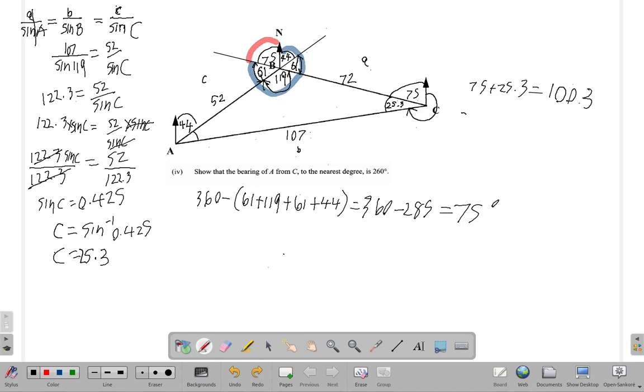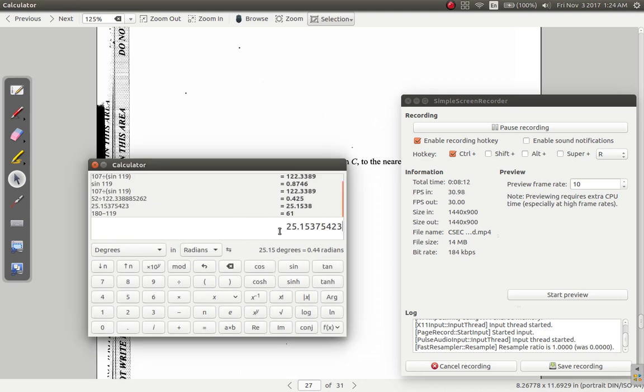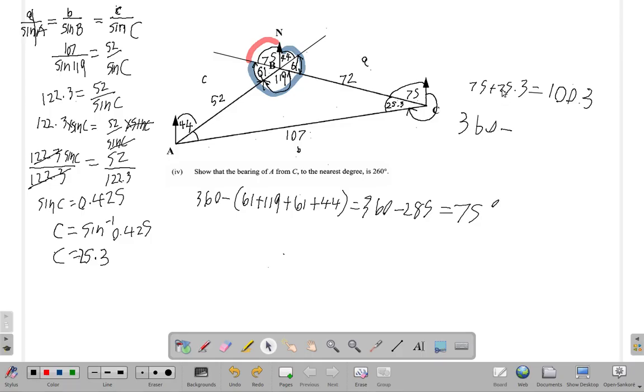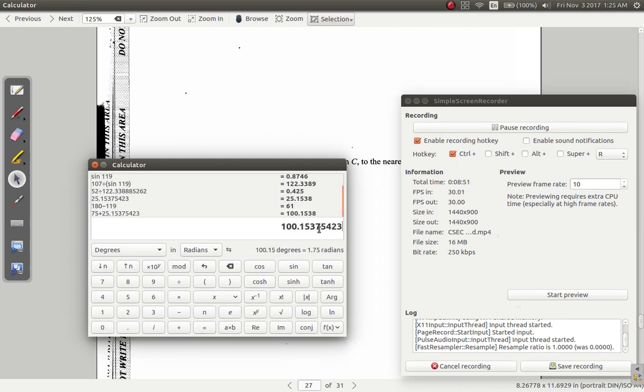Then 360 minus this 100.3. Actually, let me get back the accurate figures. This 75 plus 25.3... getting back to my on-screen calculator here, was it 25.3? It's 25.13, it seems. Not 25.3, that was an error. So 75 plus that equals 100.153 something.